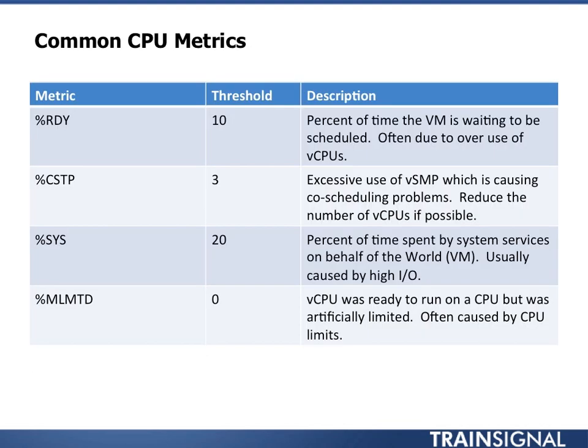Let's look at a couple of common metrics. First is Percent Ready — this is the percent of time a VM is waiting to be scheduled. This happens when a VM is ready to have a thread executed on a physical processor, but the vSphere scheduler says hold on. We often see this with VMs with multiple vCPUs, because the scheduler tries to place them on the same CPUs as before for cache locality, and has issues scheduling them. It's often due to the overuse of vCPUs — if you don't need them, you're causing scheduling issues and will hit high ready time.